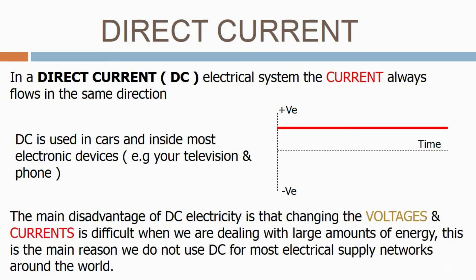The main disadvantage of DC electricity is that changing the voltages and currents is difficult when we are dealing with large amounts of energy. This is the main reason we do not use DC for most electrical supply networks around the world.